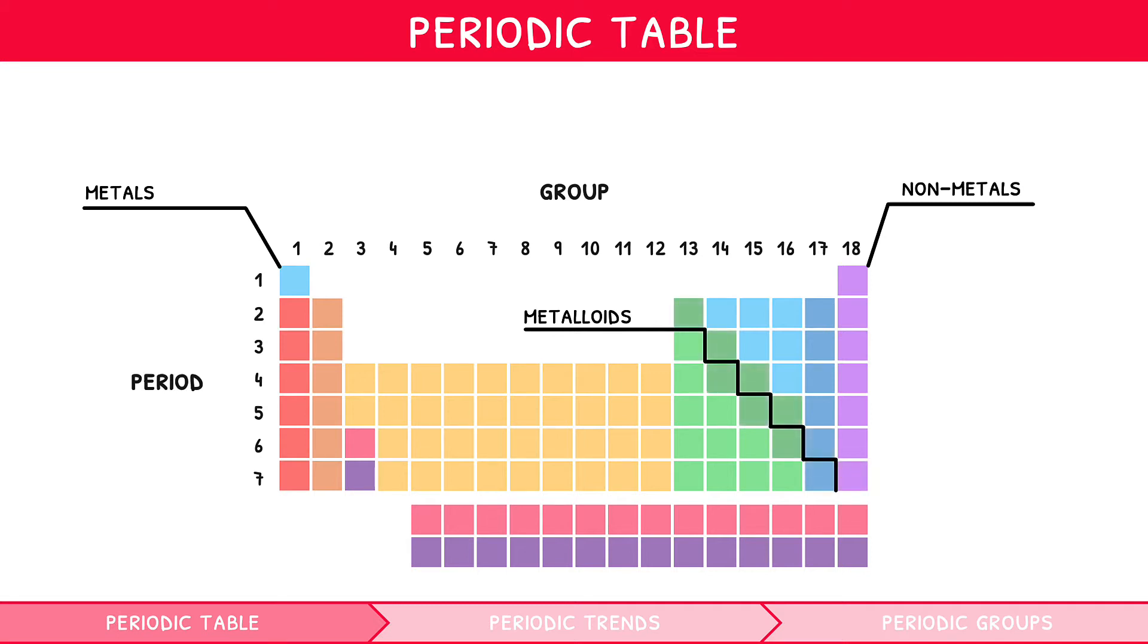However, we can further classify the metals, metalloids, and non-metals by their specific groups. The important groups you need to memorize are Group 1, which is known as the alkali metals, Group 2, which is known as the alkaline earth metals,